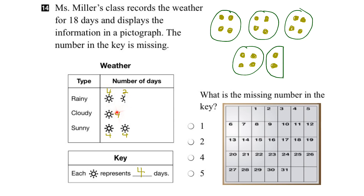Adding those up: 4, 5, 6, 7, 8, 9, 10, 11, 12, 13, 14, 15, 16, 17, 18. So that matches our 18 days, and we know we've got the right answer. Looking at our list of options, we can see that the third option — the number four — is the right answer.